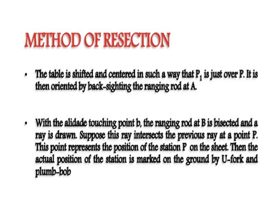Then the table is shifted and centered in such a way that P1 is just over B. It is oriented by back sighting the ranging rod at A. With the alidade touching point B, the ranging rod at capital B is bisected and a ray is drawn. This ray intersects the previous ray at station P, which represents the position of station P on the sheet. The actual position of the station is then marked on the ground by U-fork and plumb bob.